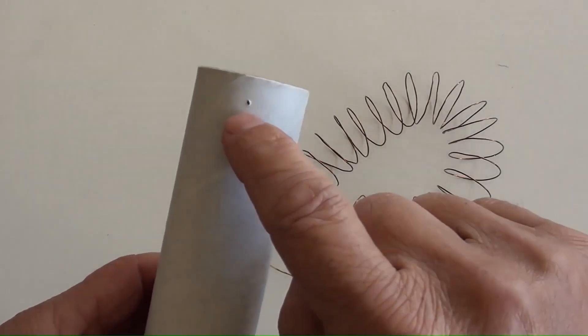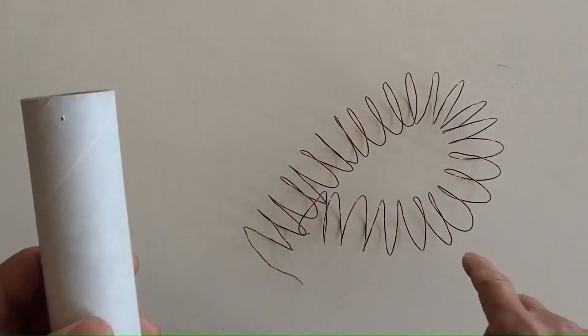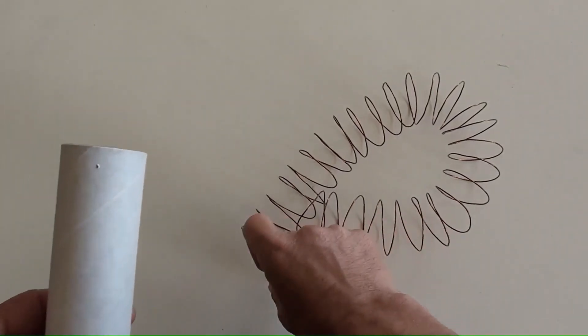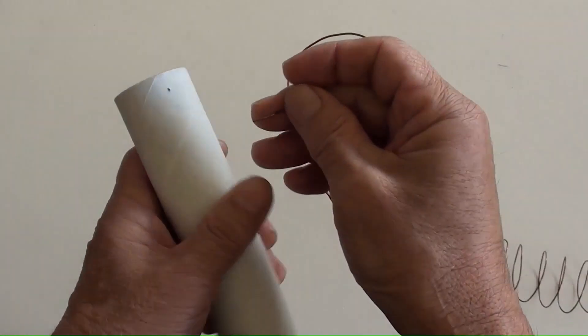A hole has been drilled for getting the wire through. And magnetic wire pre-made like this, for easy handling, while winding the coil.